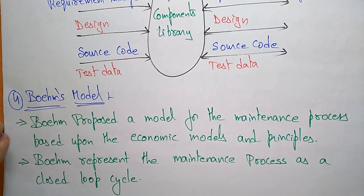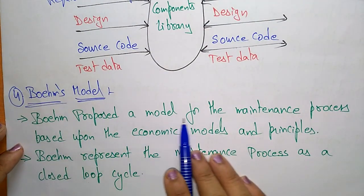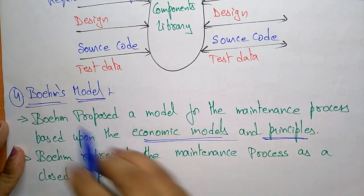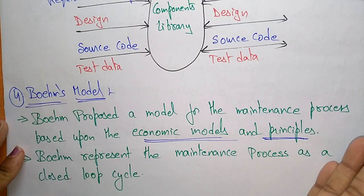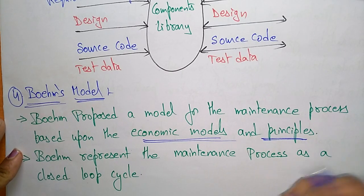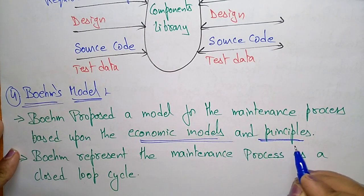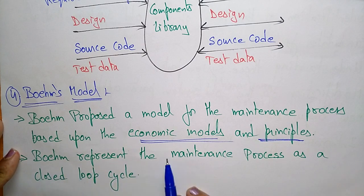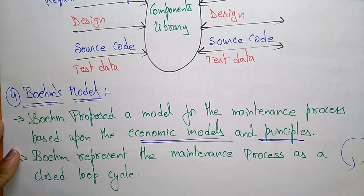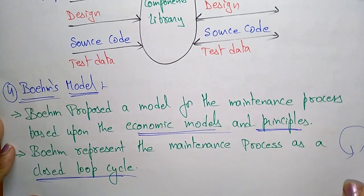The next model is Boehm's model. Boehm proposed a model for the maintenance process based upon economic models and principles. He represents the maintenance process as a closed loop cycle.